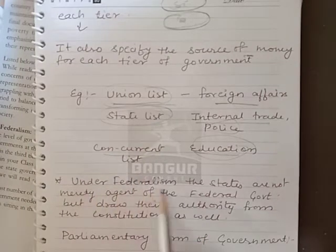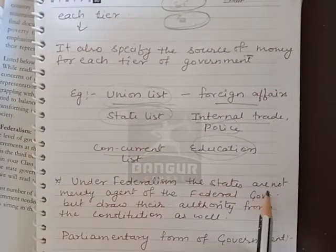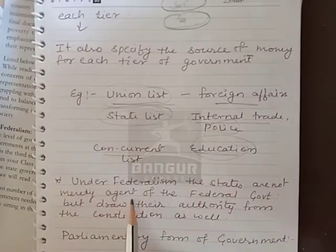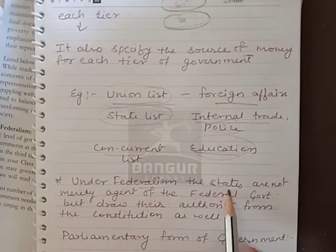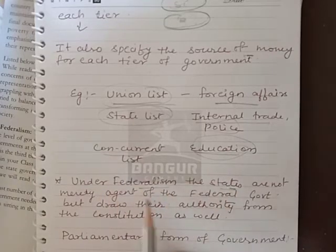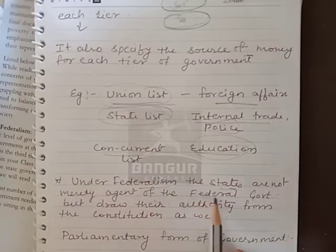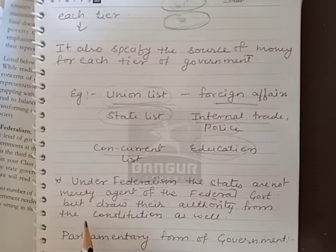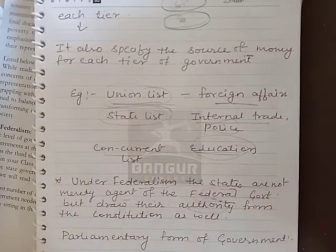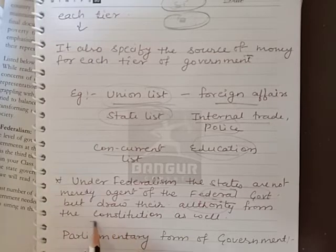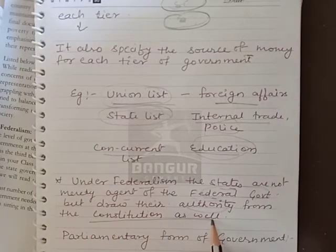Under federalism, the states are not merely agents of the federal government. The authority and power belongs to the federal government, and these things are written in the constitution.